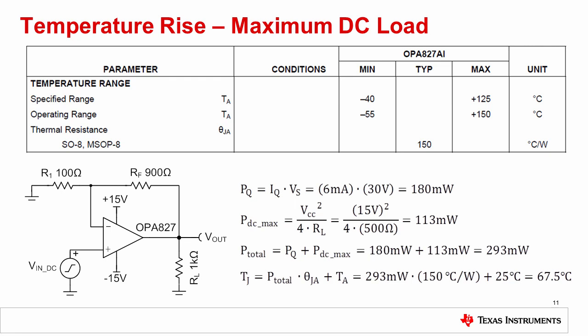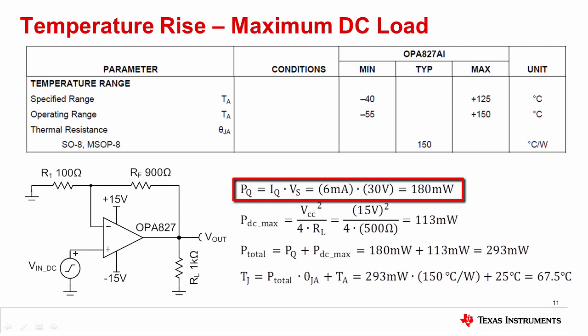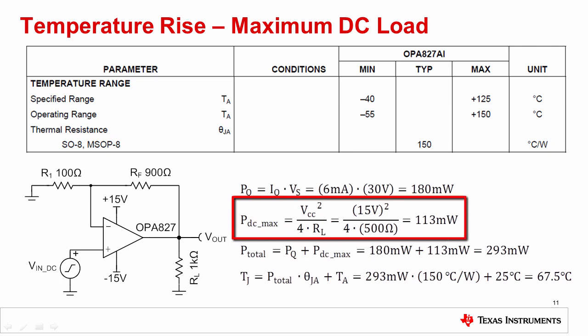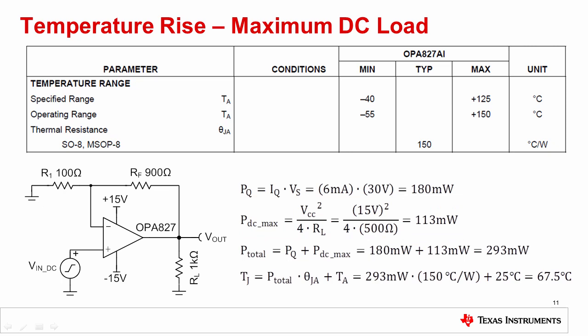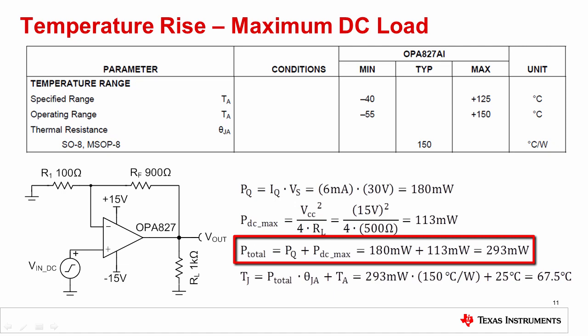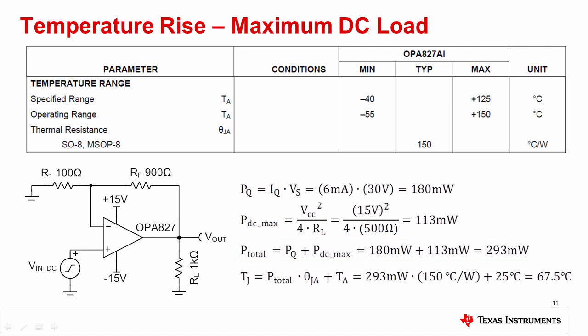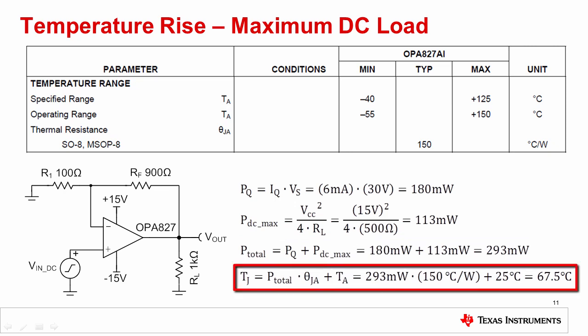Let's do an example temperature calculation for a DC load with the OPA827. First, we need to find the quiescent power PQ consumed by the device. We simply multiply the total supply voltage of 30 volts by the worst case IQ of 6 milliamps to arrive at a PQ of 180 milliwatts. Next, we need to calculate the maximum internal power dissipation from the DC load current. We use the maximum DC power dissipation formula from earlier with our VCC of 15 volts and the effective load of 500 ohms to reach a result of 113 milliwatts. The total internal power is calculated by adding the quiescent and maximum power from the load, resulting in 293 milliwatts. Finally, the total internal power is multiplied by the device's thermal resistance and added to the ambient temperature to find the junction temperature. With theta JA equal to 150 degrees C per watt and an ambient temperature of 25 degrees C, we determine that the junction temperature rises to 67.5 degrees C.